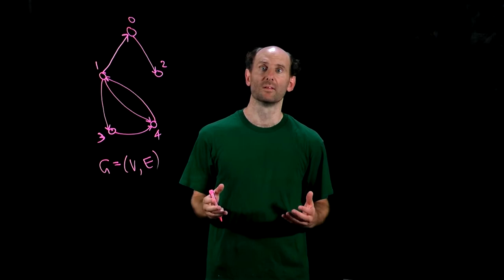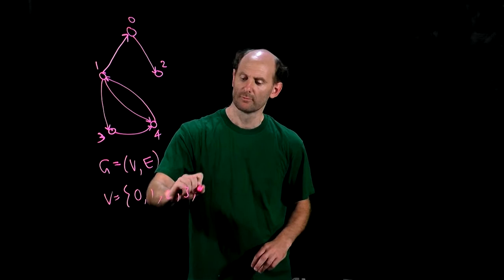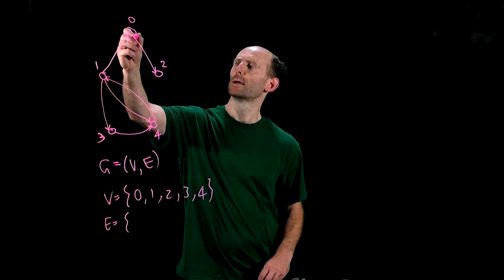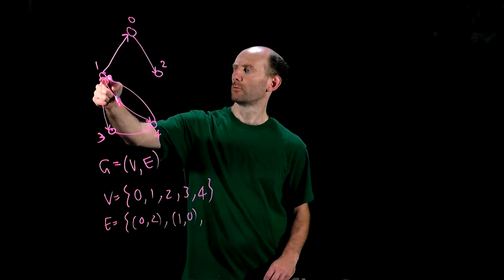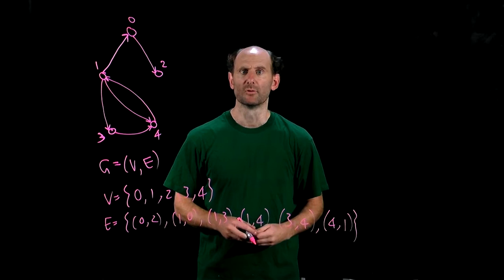In this example the node set is V = {0, 1, 2, 3, 4} as before and the arc set is E equals - so we have an arc going from 0 to 2 so we write that like (0,2), an arc going from 1 to 0, an arc going from 1 to 3 and so on. Notice that I use round brackets to represent ordered pairs and curly brackets to represent unordered pairs.